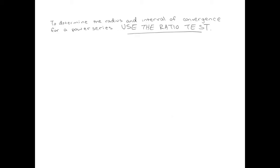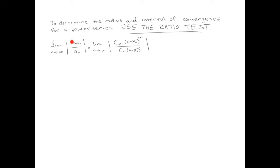For any power series, in order to determine the interval and the radius of convergence, we are going to use the ratio test. The ratio test says I should take the ratio of a_{n+1} divided by a_n. The individual terms of our series are c_n times x minus x_0 to the n power, and similarly we have the n+1 term. Doing a little algebra, x minus x_0 to the n power cancels in the numerator and denominator, and then x minus x_0 can be pulled out of the limit, because anything not involving n is a constant with respect to the limit.